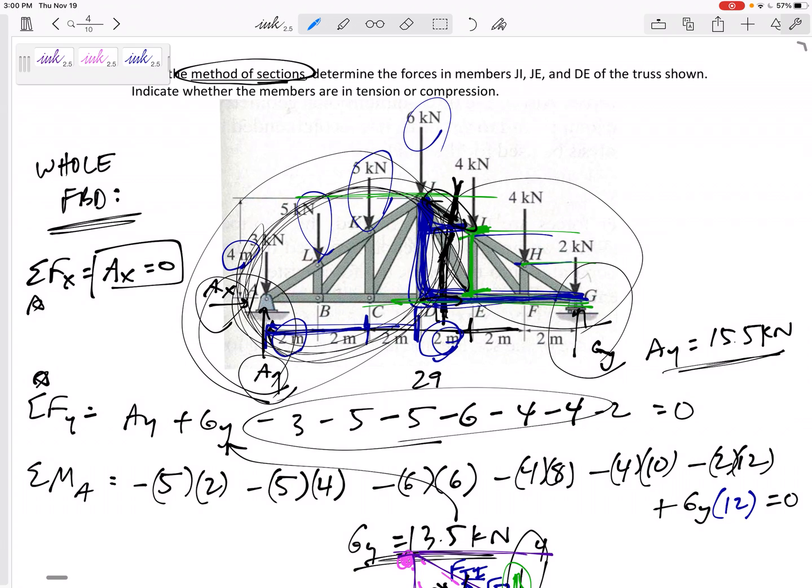You may not have to solve for everything if you know you're going to throw it away. Or method of joints. If you know you're going to start over here at joint G, then maybe you don't need AX and AY. But a good process is, and it's because the whole structure is in equilibrium.